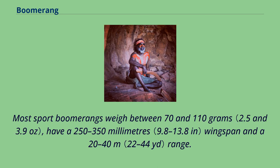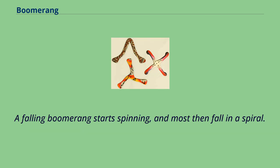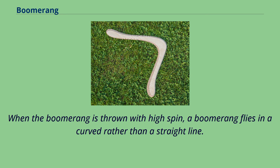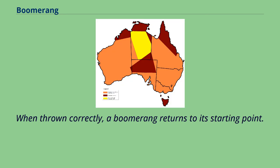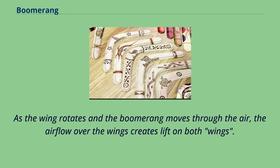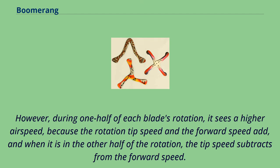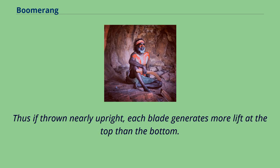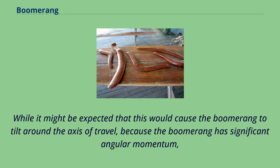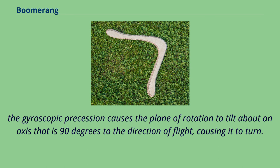Most sport boomerangs weigh between 70 and 110 grams, have a 250 to 350 millimetre wingspan and a 20 to 40 metre range. When the boomerang is thrown with high spin, it flies in a curved rather than a straight line, and when thrown correctly, returns to its starting point. As the wing rotates and the boomerang moves through the air, airflow over the wings creates lift on both wings. However, during one half of each blade's rotation it sees a higher airspeed because the rotation tip speed and forward speed add together, while in the other half the tip speed subtracts from the forward speed. Thus, if thrown nearly upright, each blade generates more lift at the top than the bottom. Because the boomerang has significant angular momentum, gyroscopic precession causes the plane of rotation to tilt about an axis 90 degrees to the direction of flight, causing it to turn.